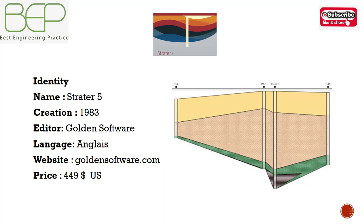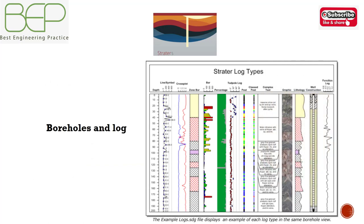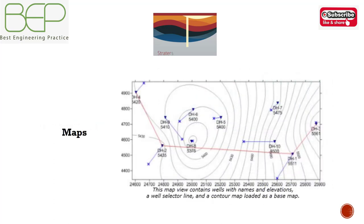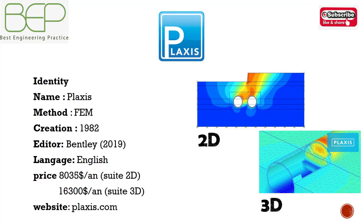Strata 5 was created in 1983 and is edited by Gordon Software. It is available in English language only — it is an American software with a price of around $1,449 USD. Strata 5 offers flexibility in the design of logs and is very useful for the representation of in-situ tests. It automatically creates corresponding columns for lithology by connecting borehole data at the touch of a button, and can design the map of a given area by locating sounding points and basic parameters.